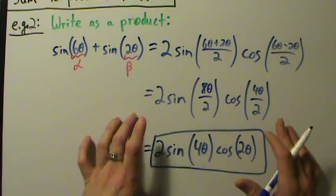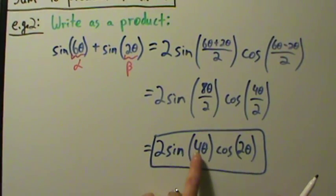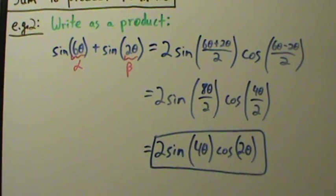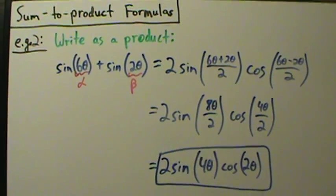Really there's not much left to simplify here once we get to this step. So two sine of four theta times cosine of two theta - that's this sum of two trig functions expressed as a product of these trig functions here. So that's example two.